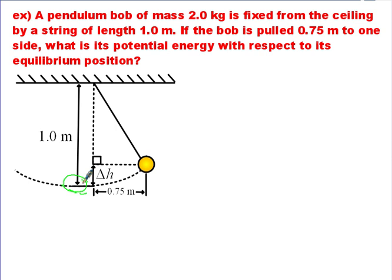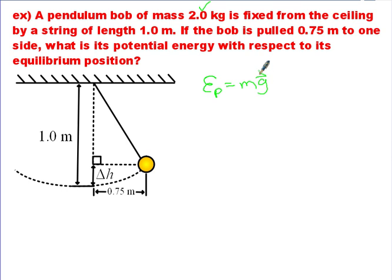Typically finding gravitational potential energy is not that hard. You just need to know two pieces of information about the object: its mass — we have that from the question — and the acceleration due to gravity, which we know on Earth. Then you need the height, and the height is the tricky part for this question. We're not given the height directly; we're going to have to calculate it.